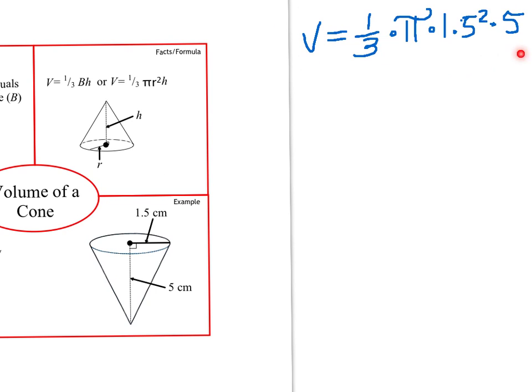So I've plugged in the information that we have here, one-third times pi times 1.5 squared times 5. I've squared 1.5 here for 2.25.